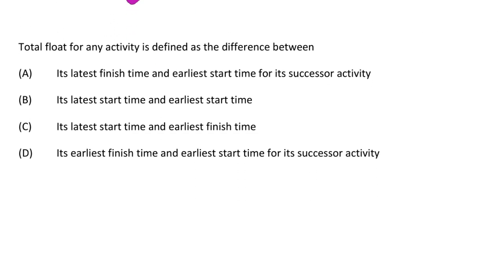Next question: total float for any activity is defined as the difference between — option A its latest finish time and the earliest start time for its successor activity, option B its latest start and the earliest start time, option C its latest start time and the earliest finish time, option D its earliest finish time and the early start time for the successor activity. The correct answer is option B, its latest start and the earliest start time.